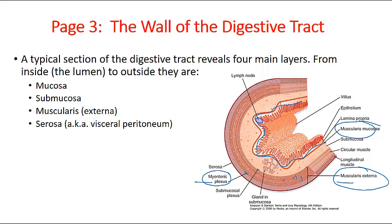Another specific region is the myenteric plexus — a network of neurons present in the muscularis externa, in close communication with the submucosal plexus. Together, the two plexuses form the enteric nervous system, which is very important for the cross-talk between the brain and intestine as food moves through.